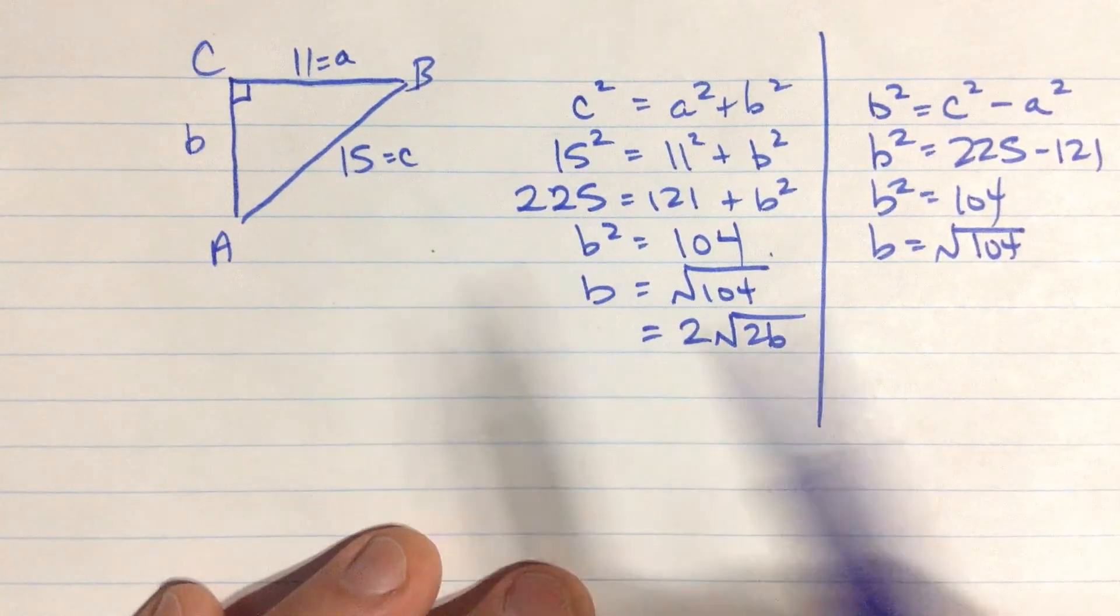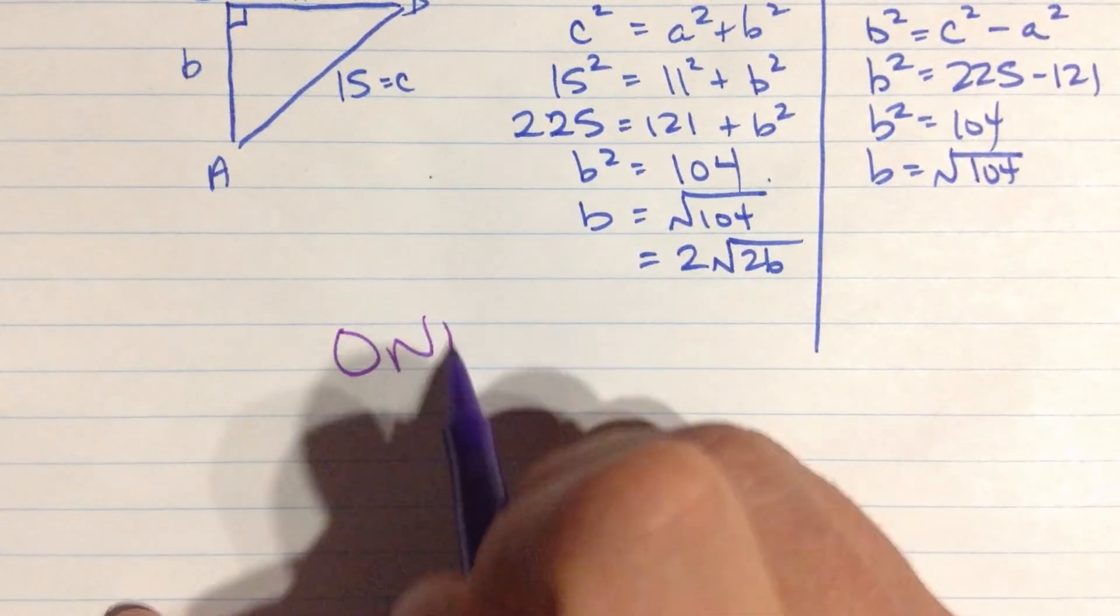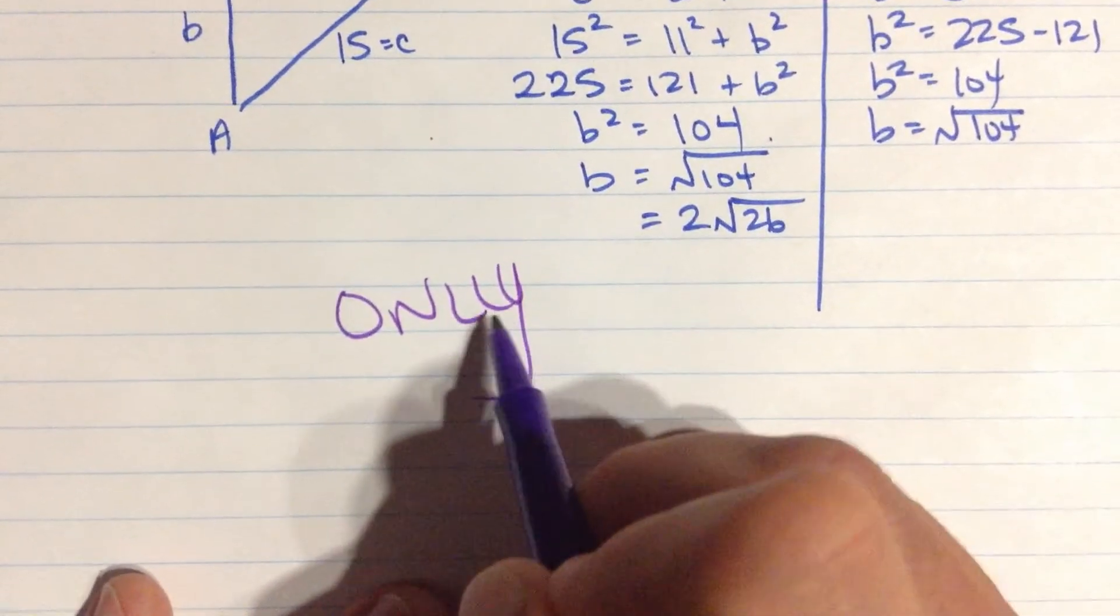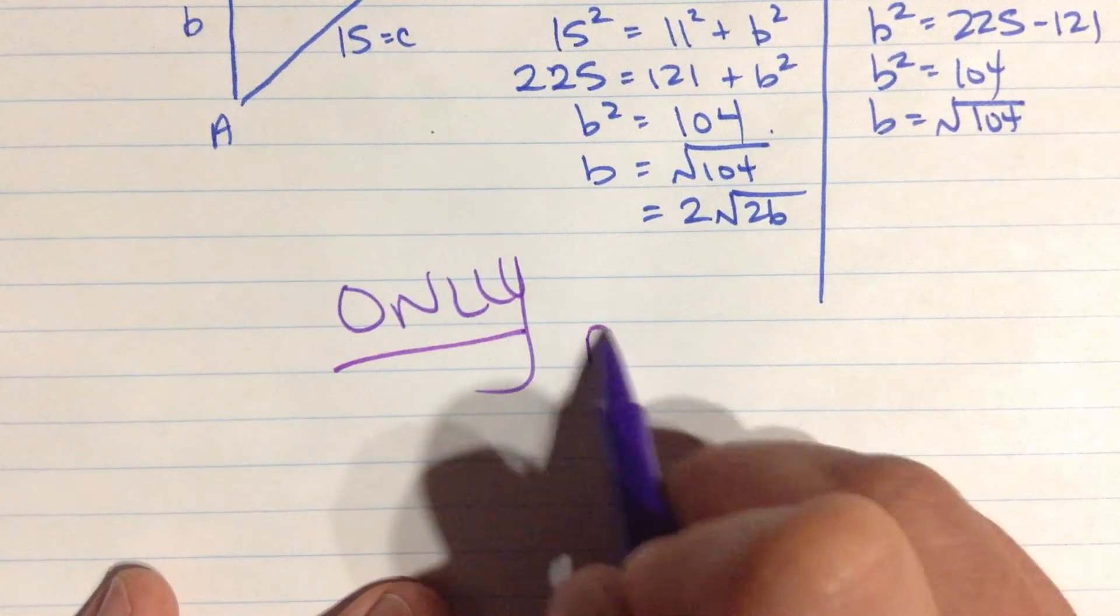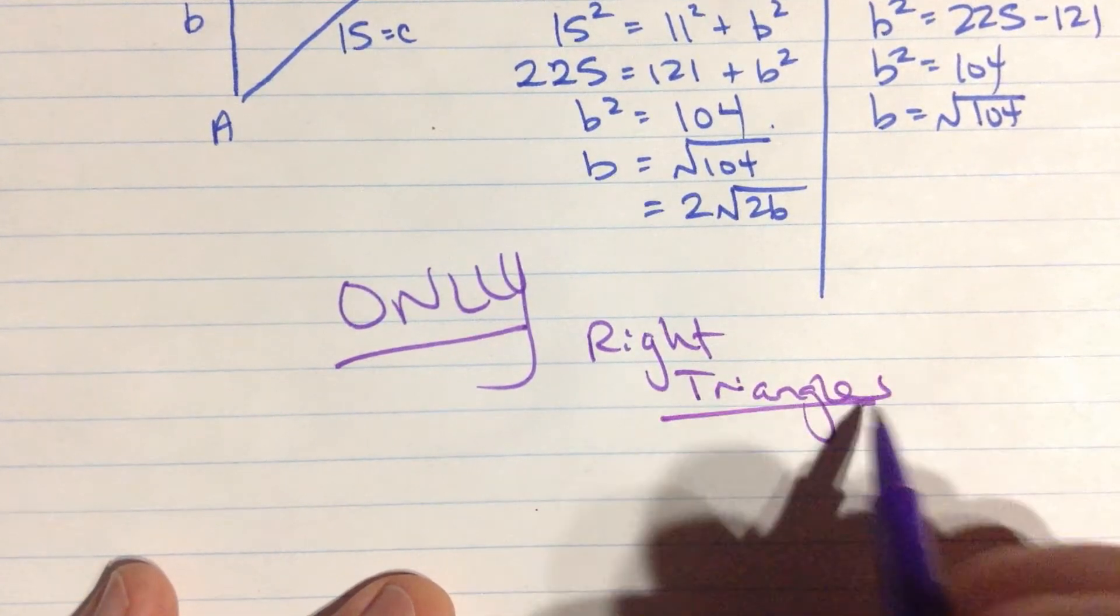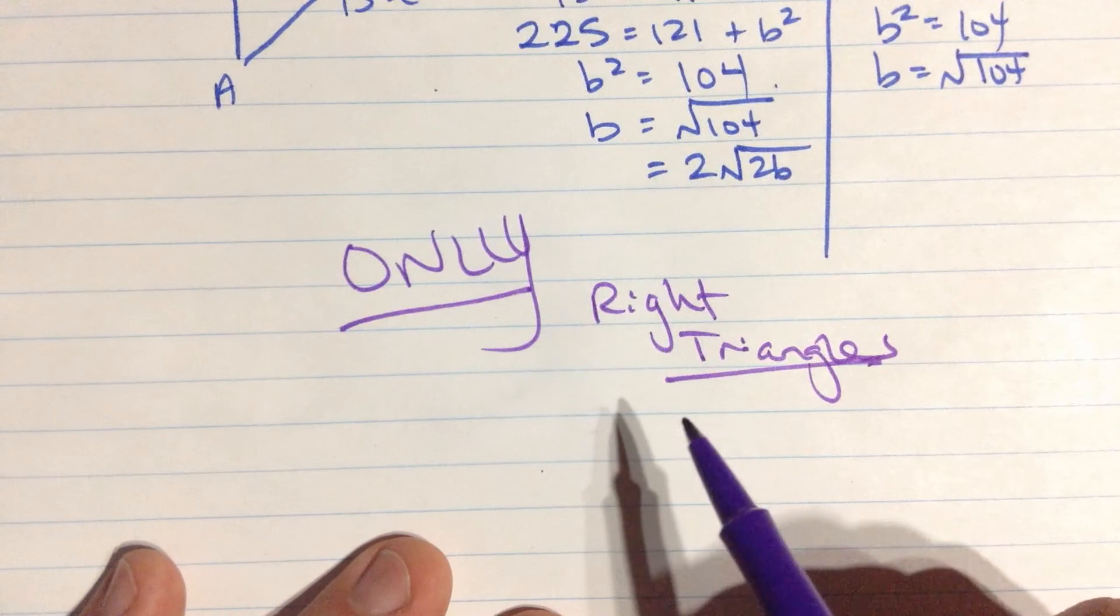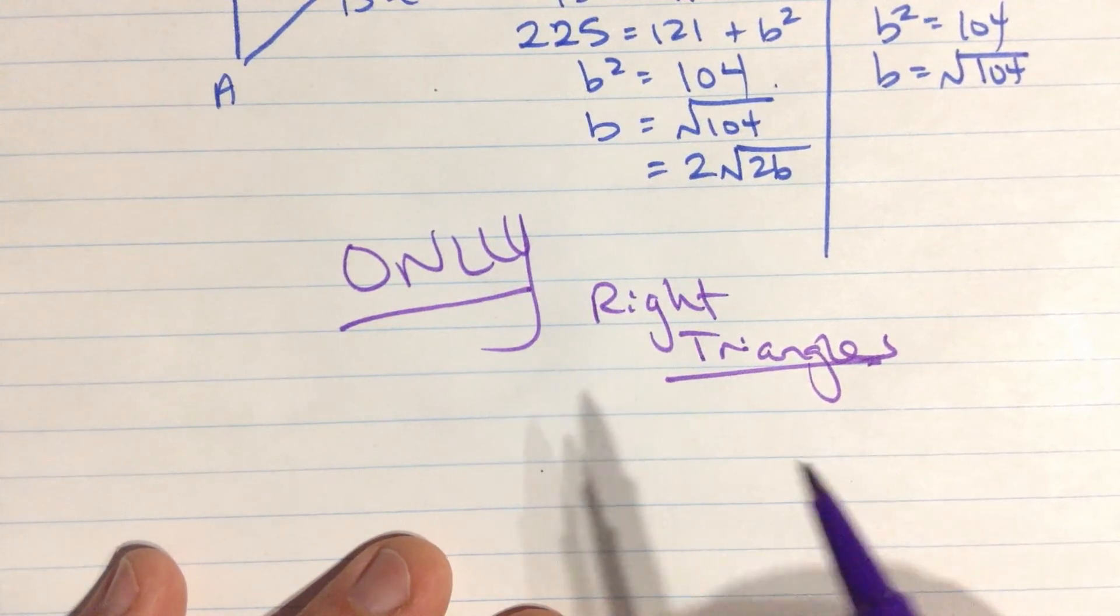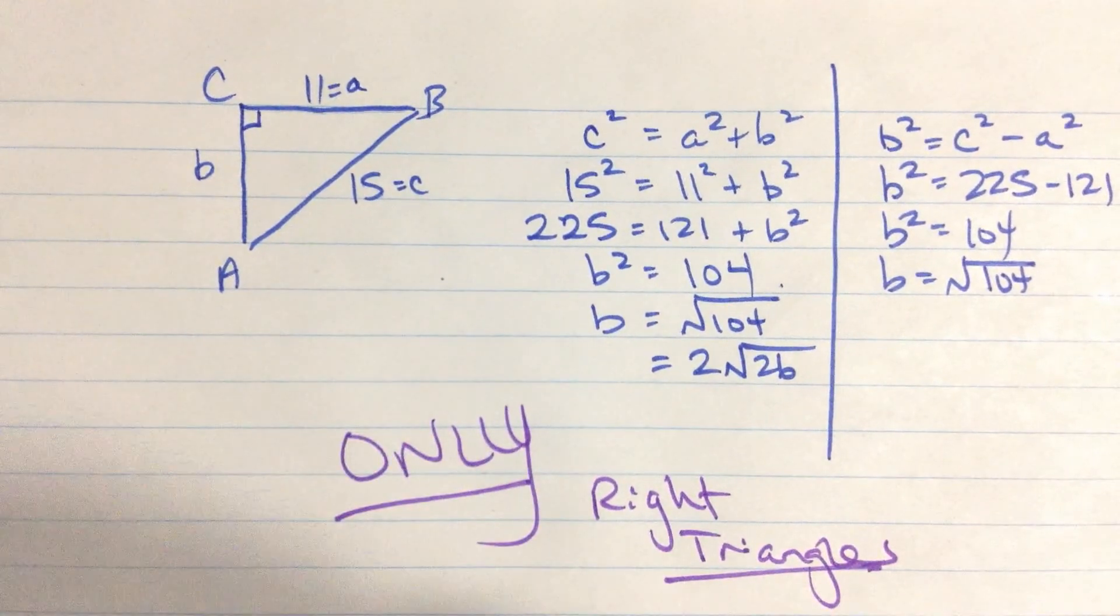And really important thing, only, only, so seriously I only put, I put two L's in my only, only for right triangles. If you try to do this with something that's not a right triangle, you're going to get a wrong answer. That's not how it works. We have a different law for that. So, only use this for right triangles. That's all the Pythagorean Theorem is good for. I hope that helps, and let me know if you have any questions.